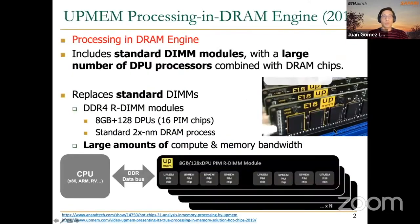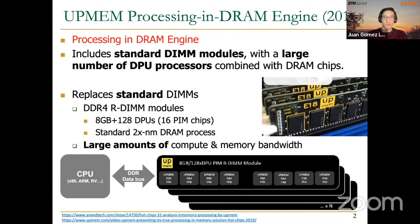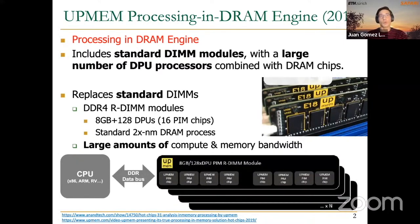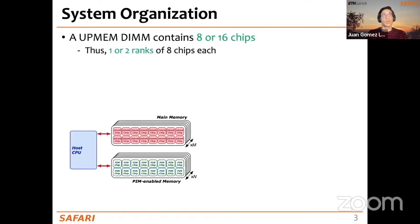This flagship slide for the UPMEM PIM architecture shows some DIMMs. These DIMMs contain several chips — eight or 16 chips typically — and inside the chips we have DRAM memory arrays and small processors called DRAM Processing Units or DPUs.